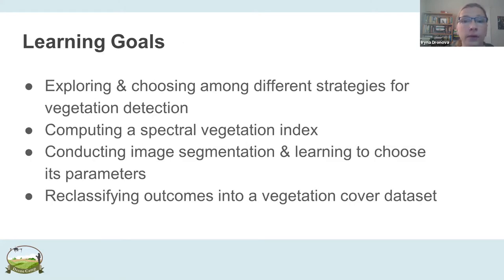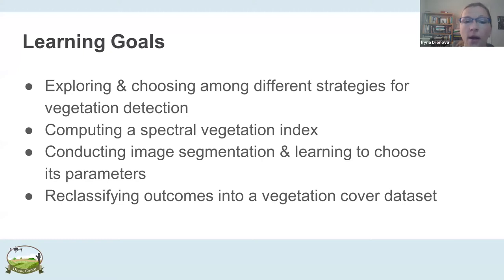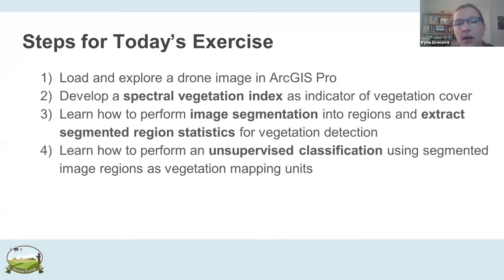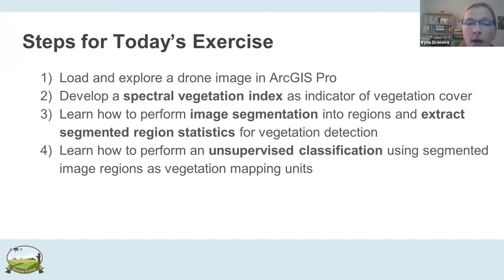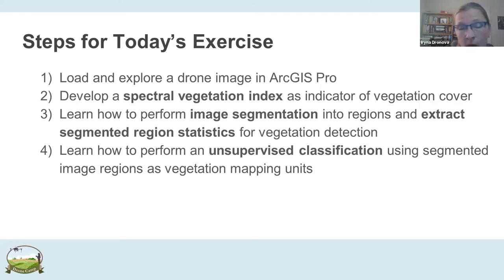Our goals for today are: exploring several strategies for detection and basic mapping of vegetation; practicing computing a spectral index; practicing an interesting technique called image segmentation and learning how to adjust it to vegetation analysis; and trying a more complex classification workflow where we reclassify outcomes into a vegetation cover dataset. This is just a quick overview of the steps — you have an exercise file with the steps outlined in more detail. We will do it together, going through all the steps and discussing various outcomes and nuances of the tool use.